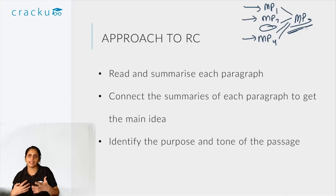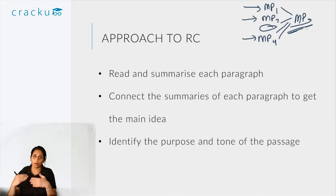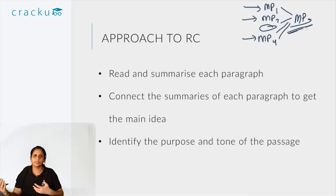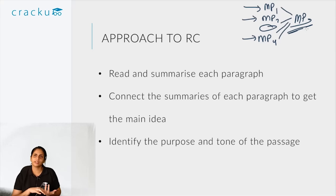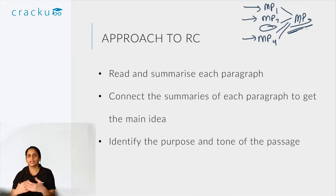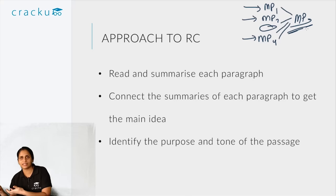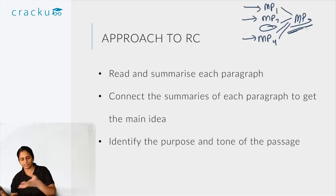If the main point is a conclusion the author wants the reader to act on — like vote in a certain way — then the purpose is to convince the reader. But the author might also be narrating an incident, informing or explaining something, or correcting a misconception — all of these are valid purposes. The primary purpose is very closely related to the main point but is not the same as it; the purpose is to deliver the main point.